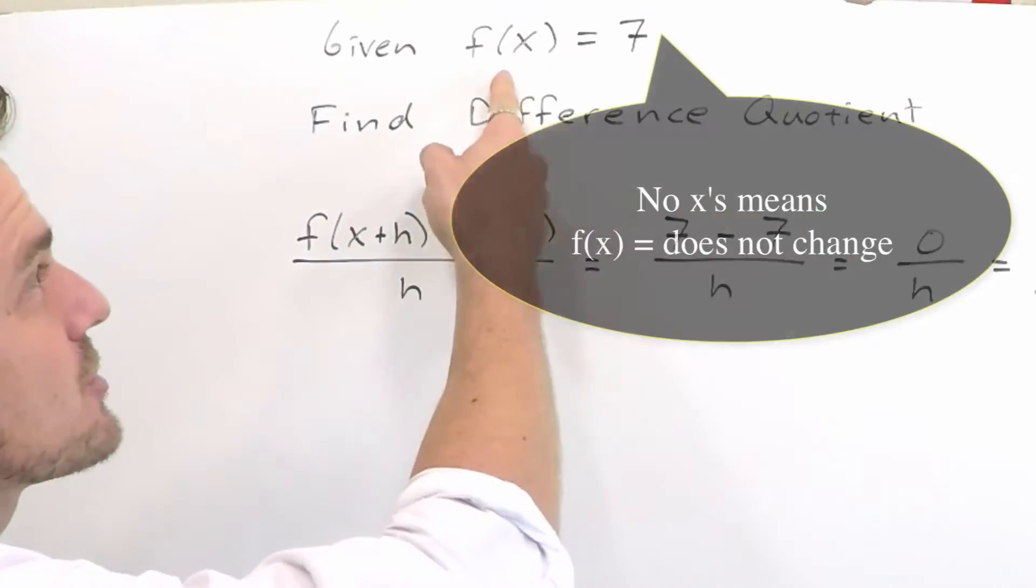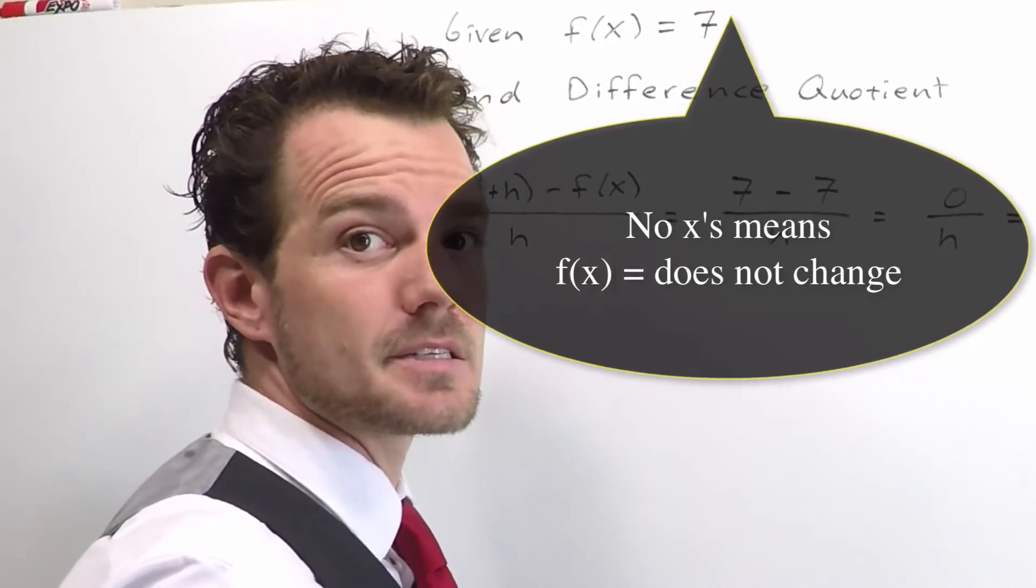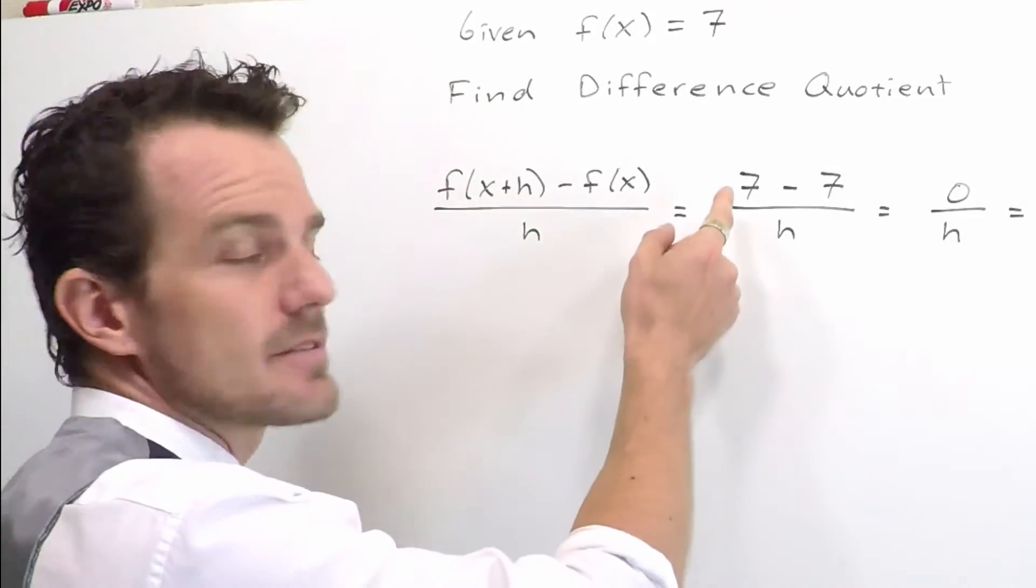However, the original function we were given never had an x, so we don't have anything to replace. There are no x's, so f of x plus h is still 7.